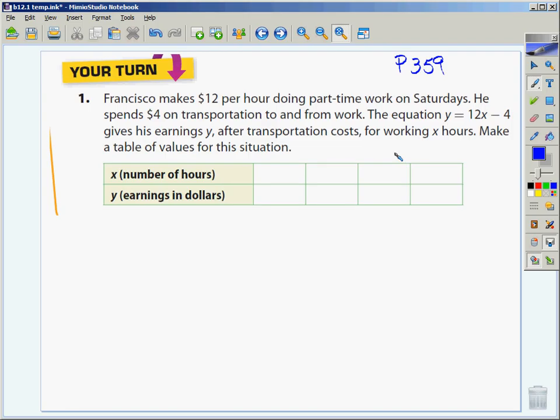Francisco makes $12 an hour doing part-time work on Saturdays. He spends $4 on transportation to and from work. The equation, y equals 12x minus 4, gives his earnings y, after transportation costs for working x hours. Make a table of values for this situation.